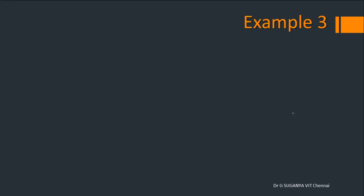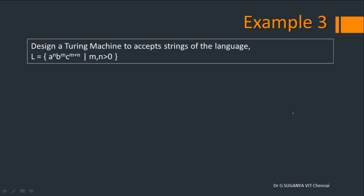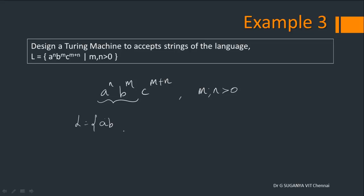Already in our previous session we designed a Turing machine for two languages. This is our third example. We are going to see how a Turing machine can be designed to accept strings of the language L = a^n b^m c^(m+n). The number of a's plus the number of b's has to be equated to the number of c's, with the condition m, n greater than 0, so at least a single a and single b should be there.